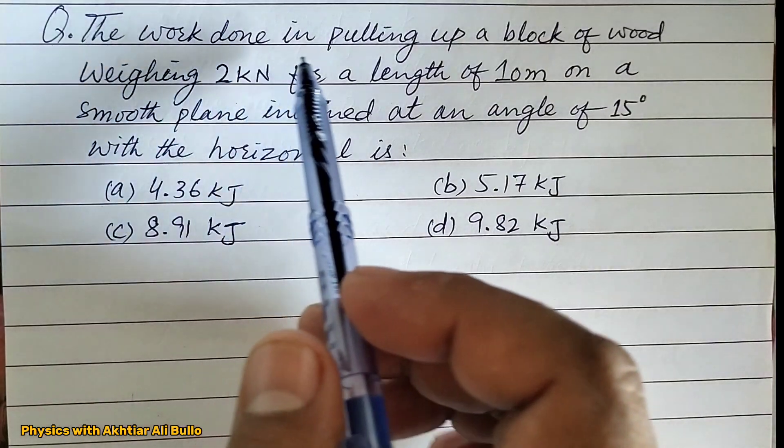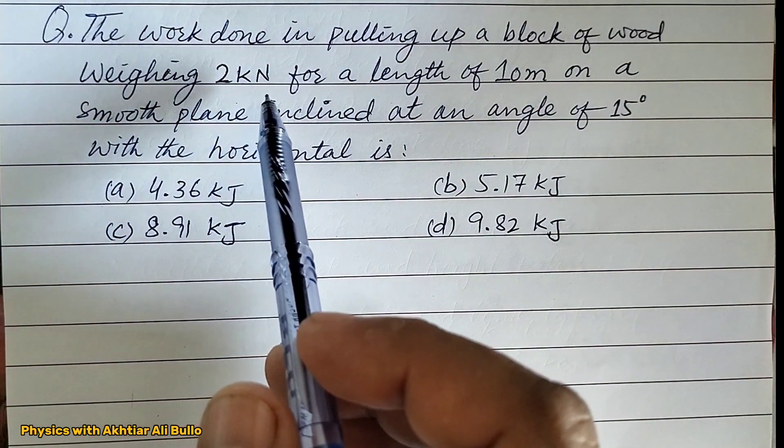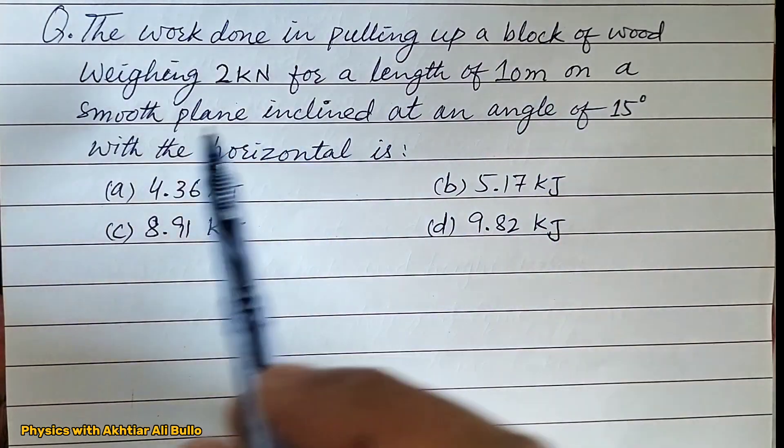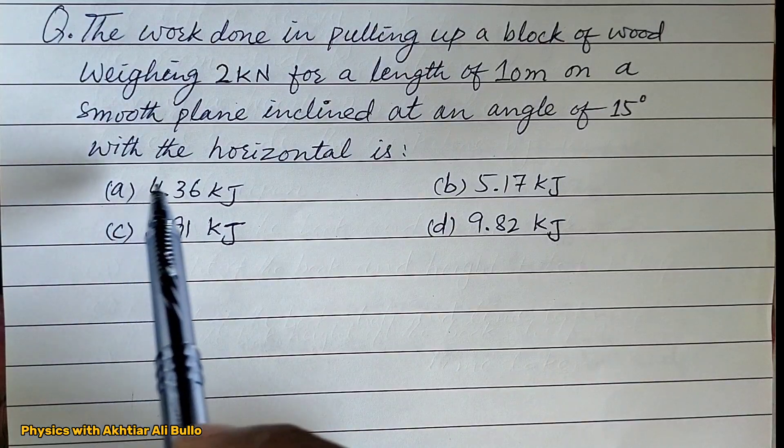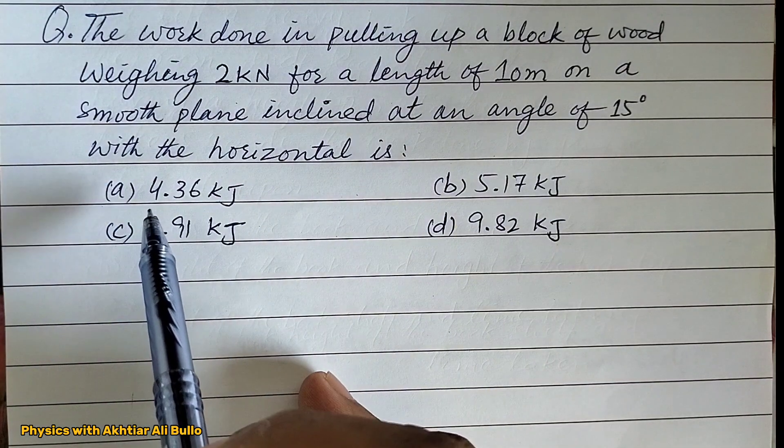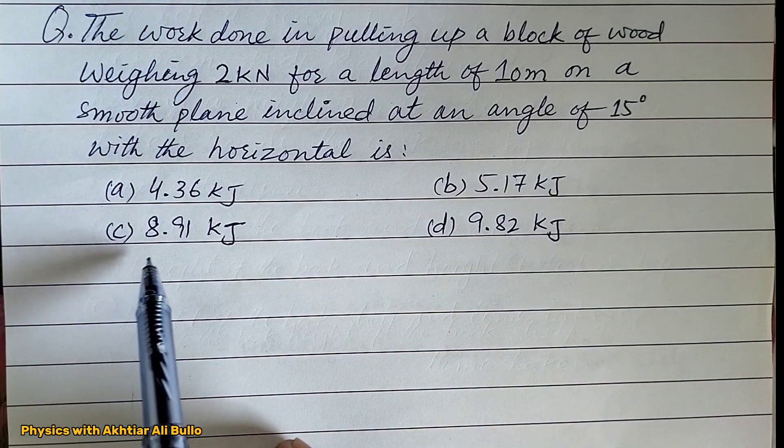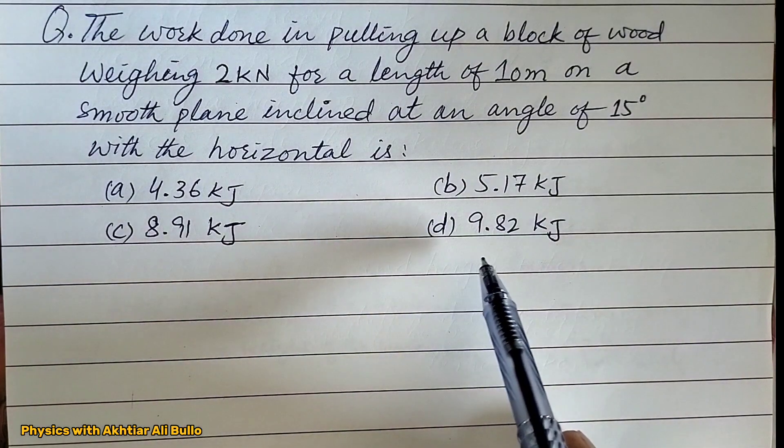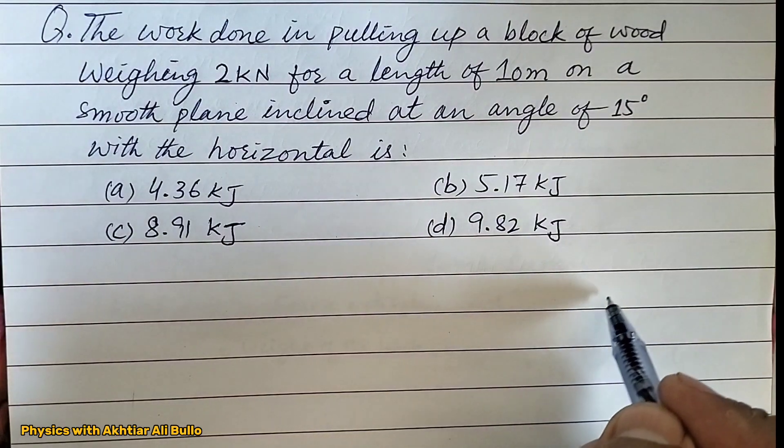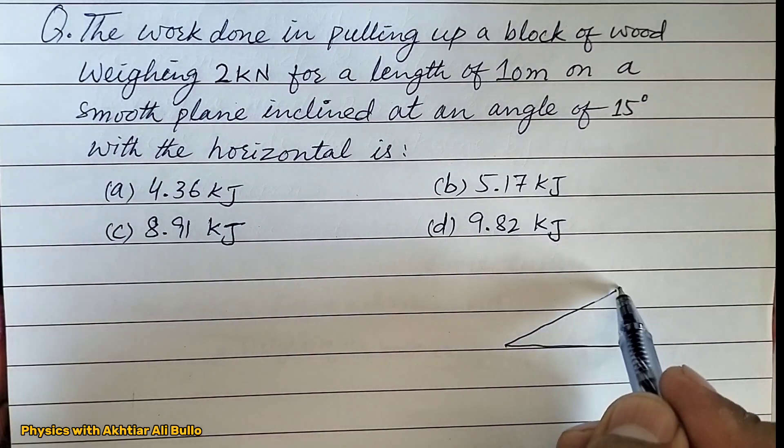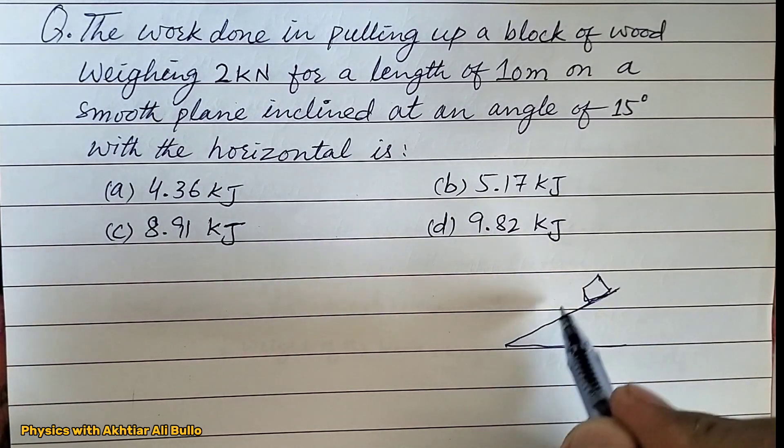The question is, the work done in pulling up a block of wood weighing 2 kN for a length of 10 meters on a smooth plane inclined at an angle of 15 degrees with the horizontal is: (a) 4.36 kJ, (b) 5.17 kJ, (c) 8.91 kJ, (d) 9.82 kJ. A block of wood is lying on the inclined plane.